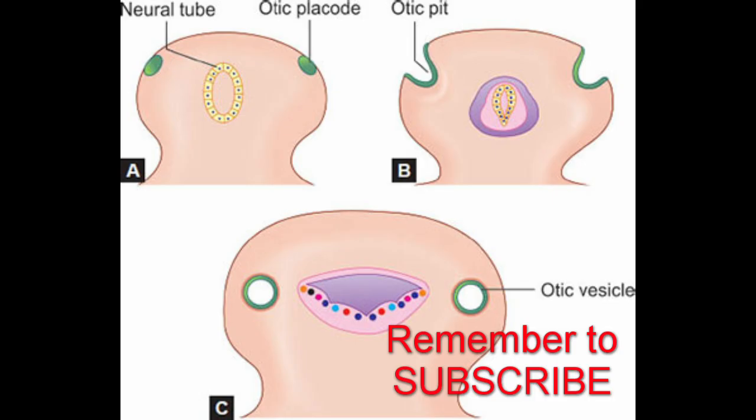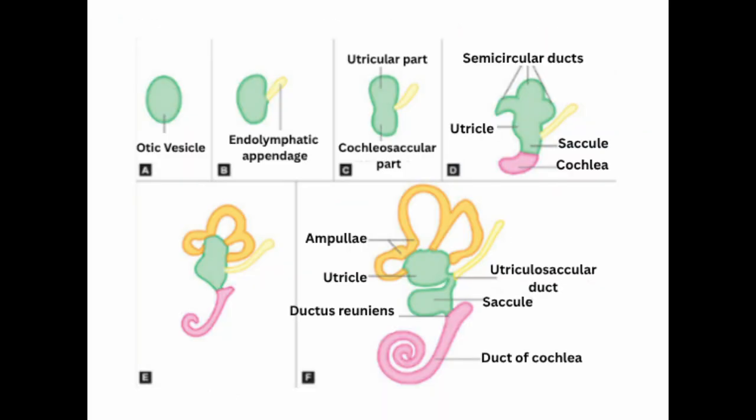The otic vesicle has two visible regions: a ventral part and a dorsal part. From the ventral saccular part — also called the cochlear-saccular part — the inner ear structures involved in hearing are formed, mainly the cochlear duct and the saccule. From the dorsal utricular part, the vestibular system is formed — that is, the utricle, semicircular canals, and the endolymphatic saccule.